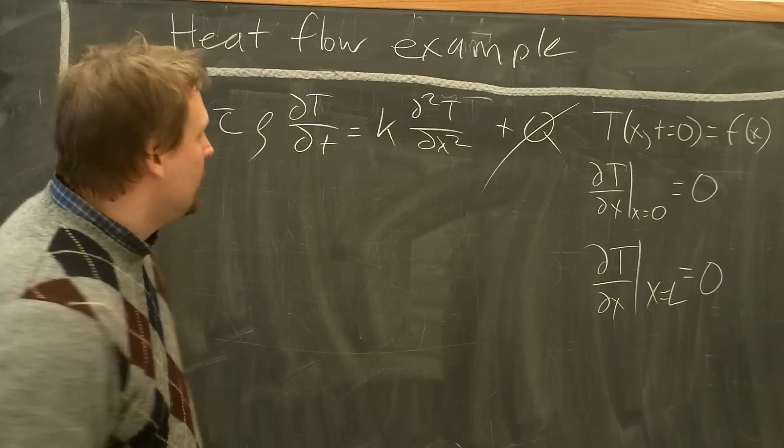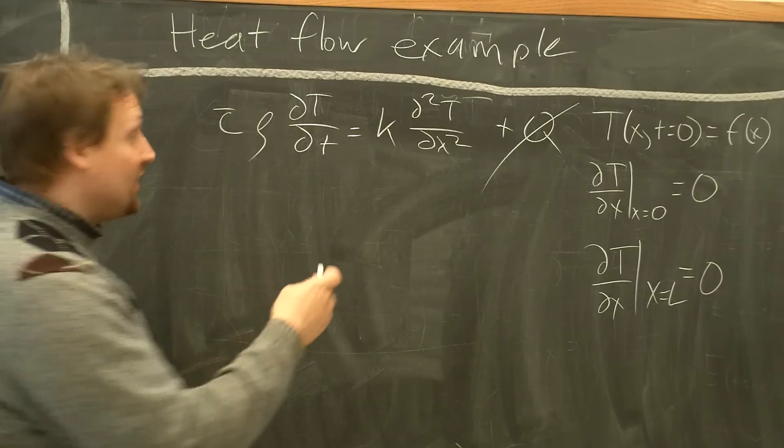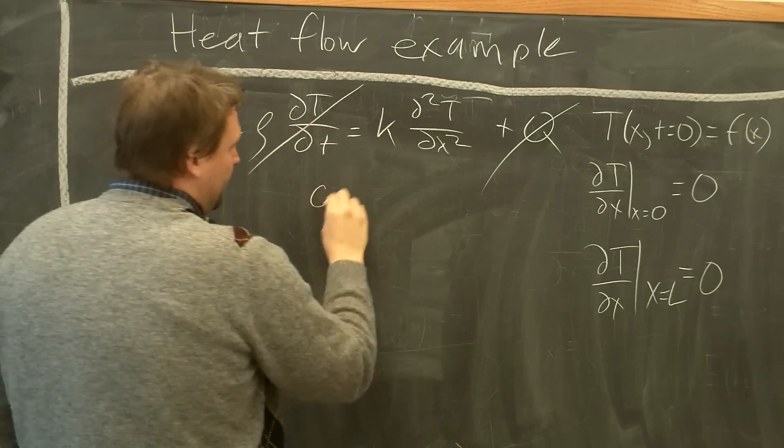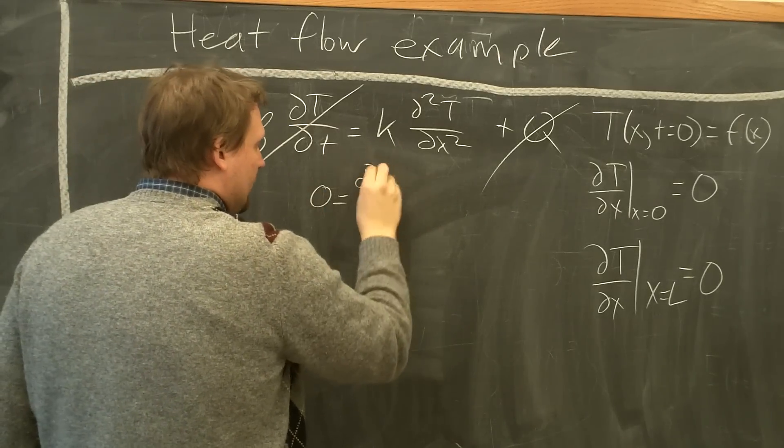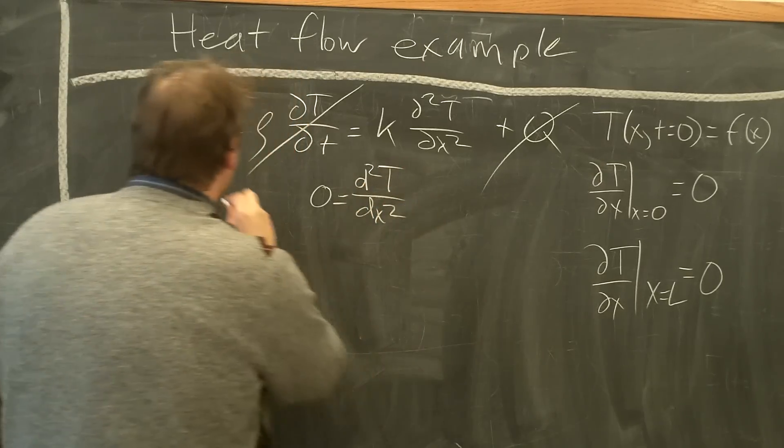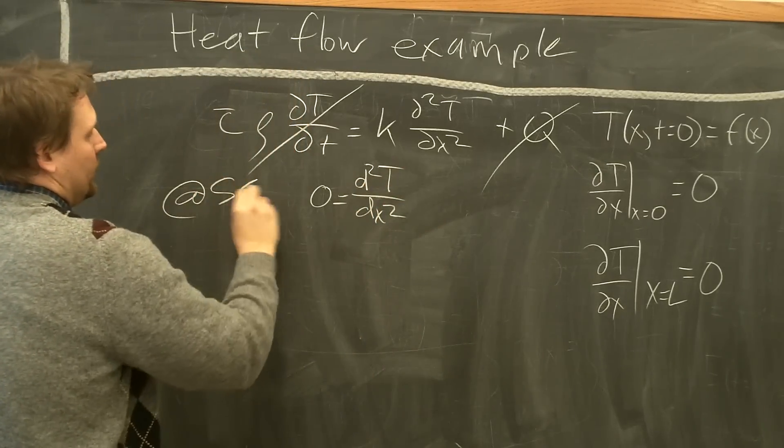So how do we solve this problem? First, let's look at steady state, get rid of this, divide by K, you end up with the following differential equation now. It's a partial differential equation, d squared t dx squared at steady state.